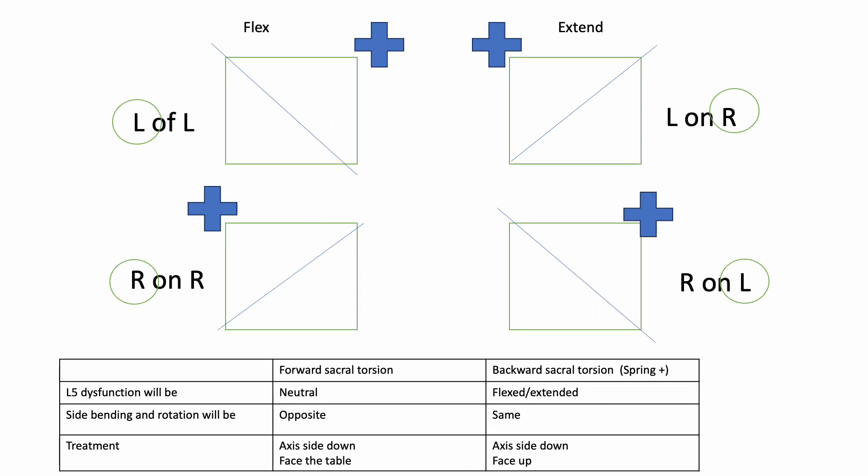I've put this in a nicer display for you to put in your study guide, and this is all the questions you'll be getting for this. We have the flexed and the extended categories. Flexed is going to be left on left, right on right—they're going to be the same. Extended or backward torsions are left on right, right on left.